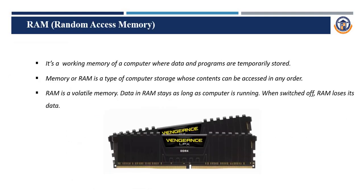The next component is RAM — Random Access Memory. In mobile phones and computers, RAM is a major part. Nowadays, 1GB or 2GB RAM is rarely used; systems typically use 8GB, 16GB, or 32GB RAM. RAM is temporary storage memory — all data is stored temporarily in RAM. When the system is powered off or switched off, all the data in RAM is lost.